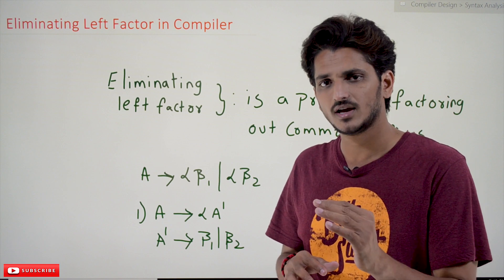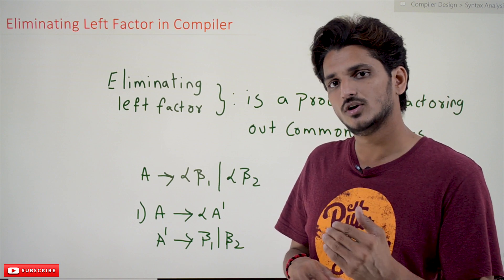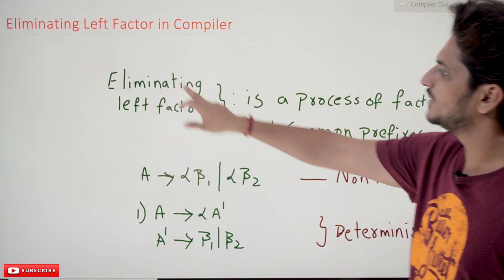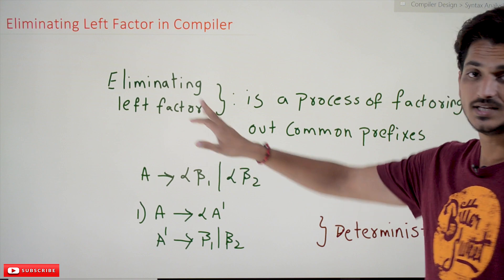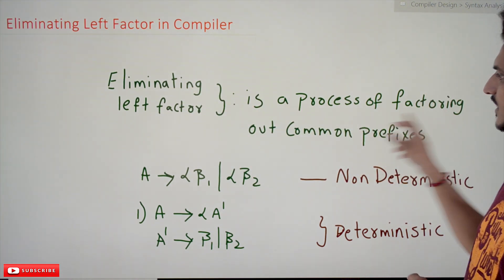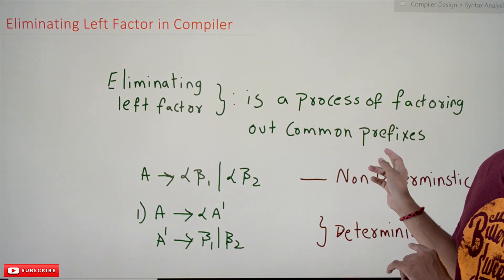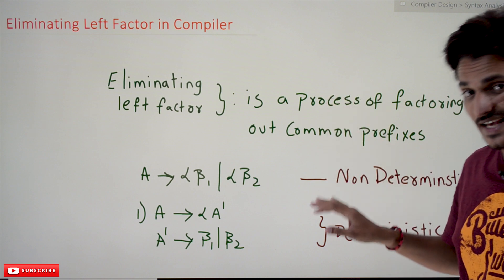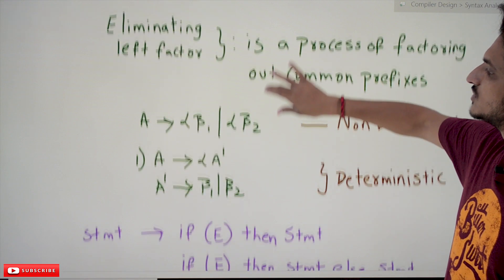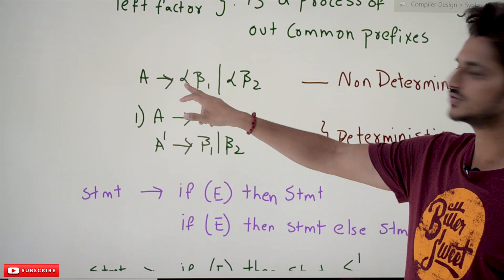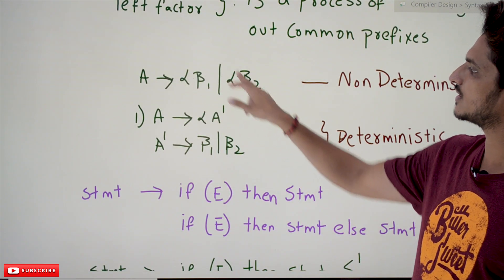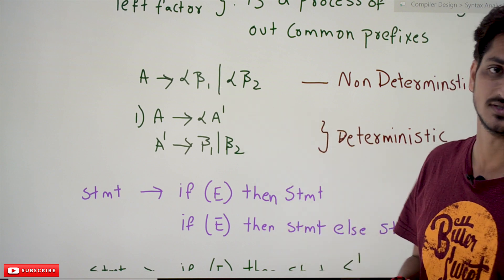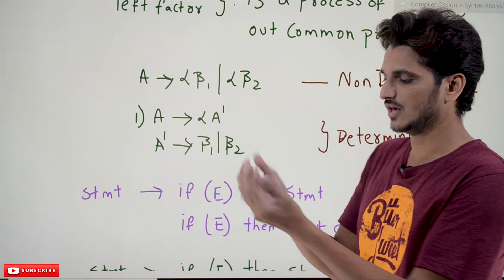Coming to today's class, let's first understand what the problem is with the left factor — what is meant by left factor. Eliminating left factoring is a process of factoring out common prefixes. This is better understood with an example. Take an example: A tends to alpha beta1 or alpha beta2.